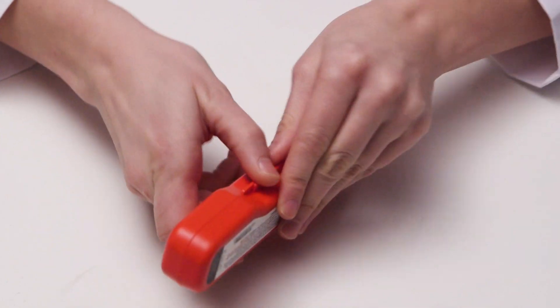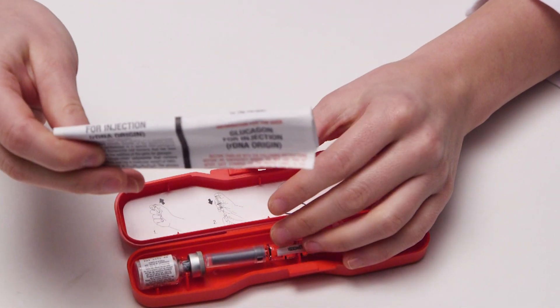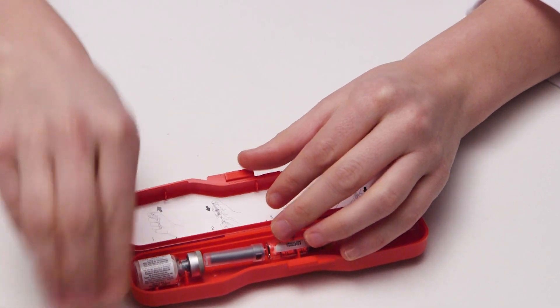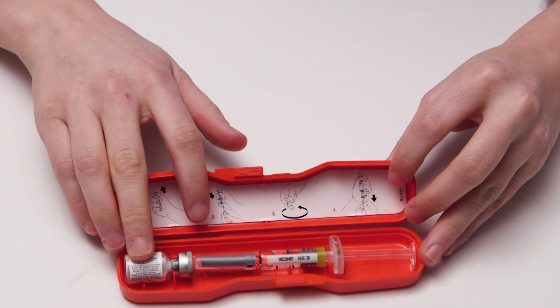Open up the glucagon kit. There are instructions inside of the kit if you need them later. Inside the kit is also a syringe full of liquid and a vial full of powder.